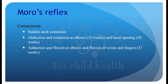Coming on to the components of Moro reflex: it comprises sudden neck extension; abduction and extension at elbows, which appears at 32 weeks gestational age; and hand opening, appearing at 28 weeks; and lastly, adduction and flexion at elbows and flexion of wrists and fingers, appearing at 37 weeks of gestational age.